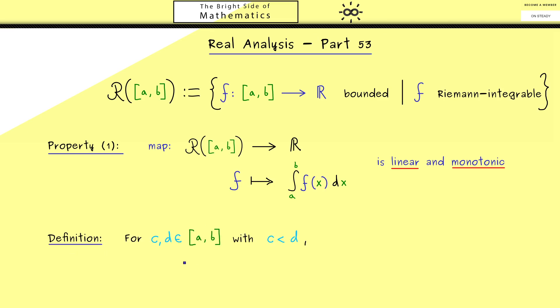Now maybe you have seen this before, but often instead of the boundary points of the interval, some other limits for the integral are chosen. Then you see something like the integral from c to d of the function f. Of course, in the case that c is less than d, this is not hard to interpret. We simply have a new domain where we define the integral. Or if we look at the graph of the function here, you would say we are only interested in the area here. This means that we forget what the function does outside of this new domain.